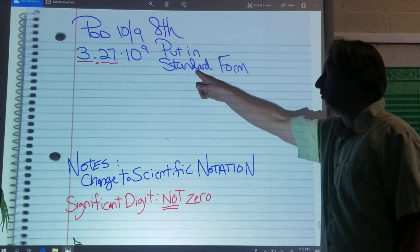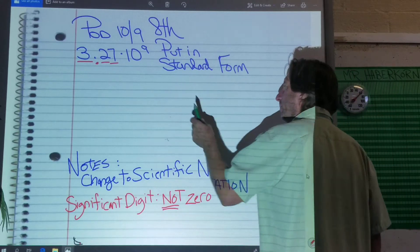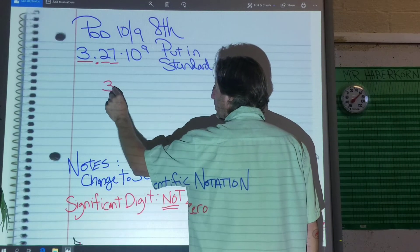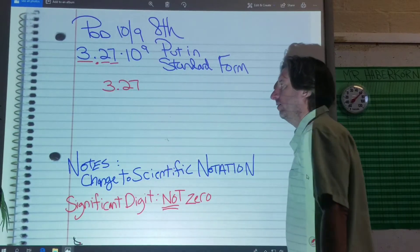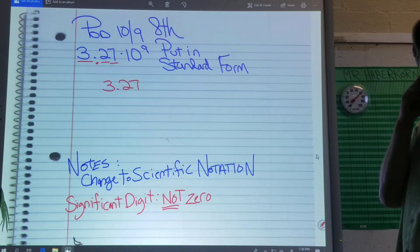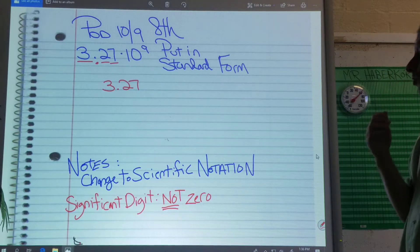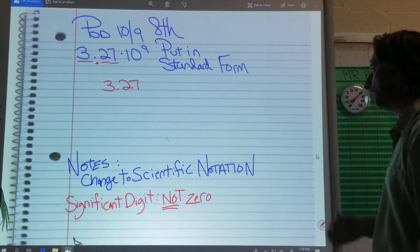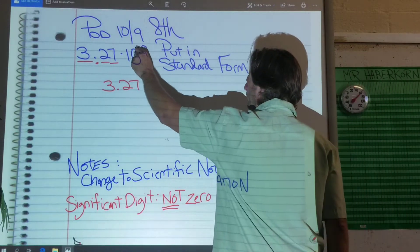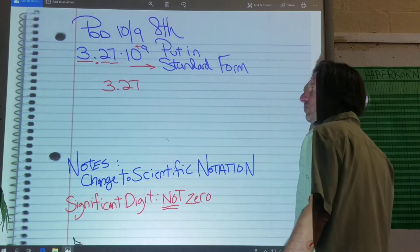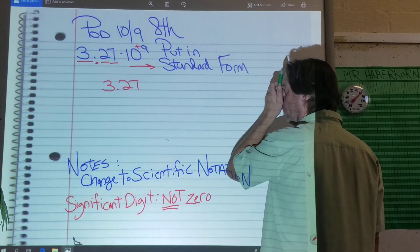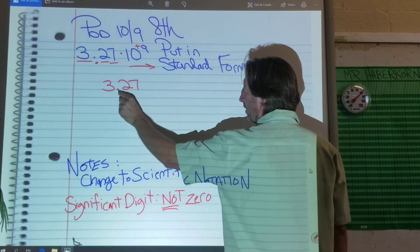So putting it in standard form is we want to turn it into a regular number. So all you do is you take your 3.27, and because this is positive 9, that means this is going to be a very large number. We're going to move our point to the right. When it's positive, we move the point to the right. So I'm moving to the right 9 spaces. That does not mean putting 9 zeros here.